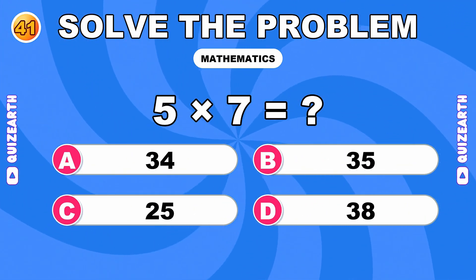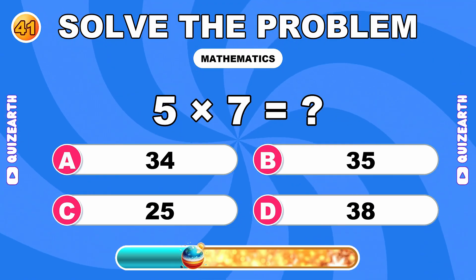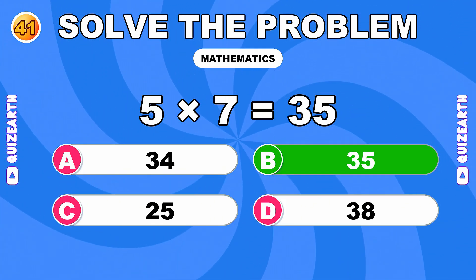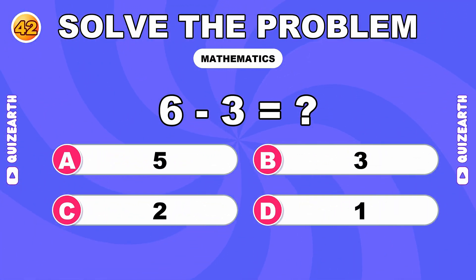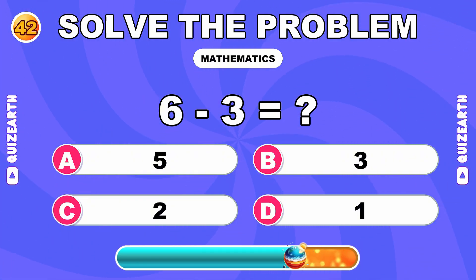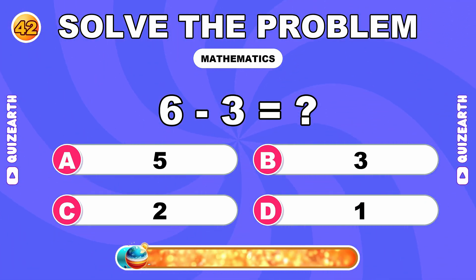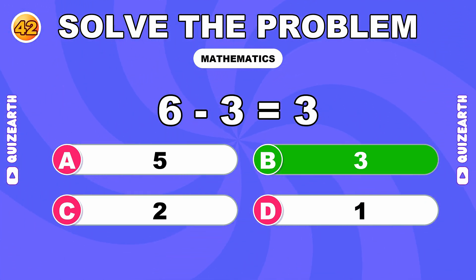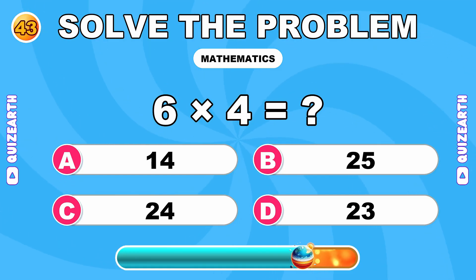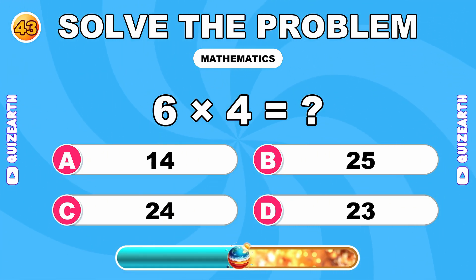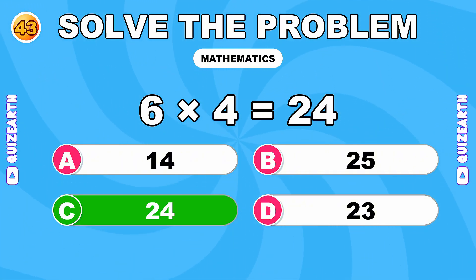How much is 5 times 7? Incredible. The answer is 35. What do you get when you subtract 3 from 6? Still going strong. The answer is 3. What is 6 times 4? Relentless. The answer is 24.